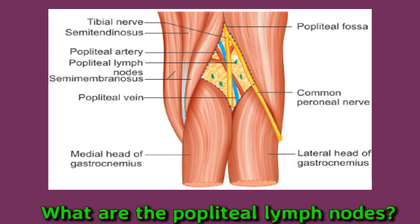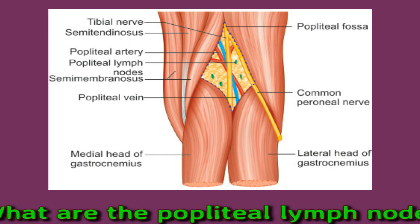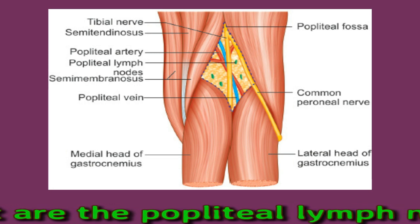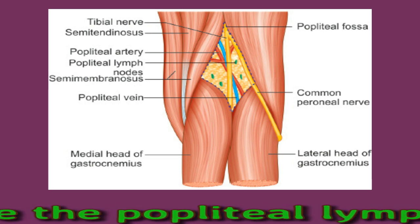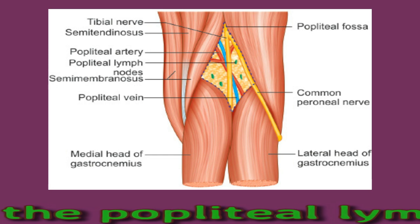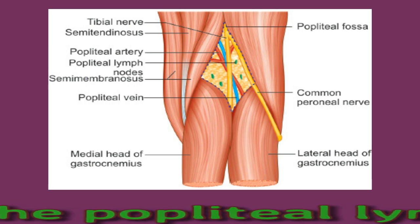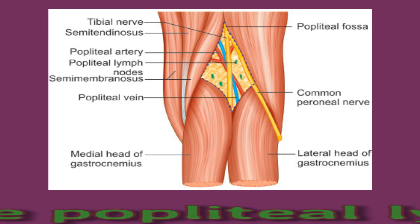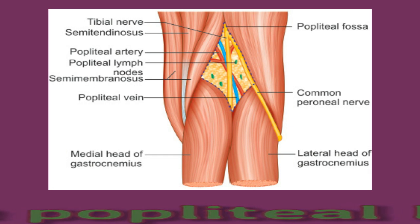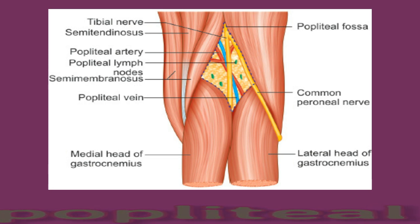Anatomy: Scientists describe popliteal lymph nodes as located deep within the popliteal fossa. The popliteal fossa is a diamond-shaped part of the leg that lies behind the knee joint. There are two to nine lymph nodes within every popliteal fossa. The picture shows swollen popliteal lymph nodes in the popliteal fossa.